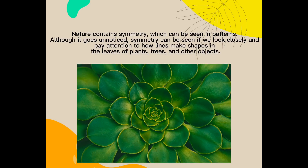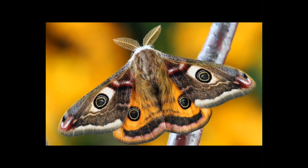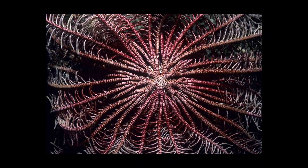Nature contains symmetry, which can be seen in patterns. Symmetry can be seen clearly when you pay close attention to how lines make shapes in the leaves of plants, trees, and objects around us. We've learned that pattern formation can also be referenced as broken symmetry. Although I wasn't previously aware of them, I find symmetry in nature to be incredibly beautiful. Now that we know that nature is much more than just green leaves and flowers, I'm thrilled about that.